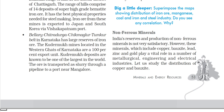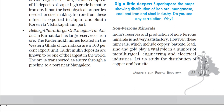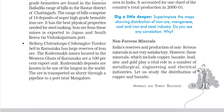The Ballari–Chitradurga–Chikmagalur–Tumkur belt in Karnataka has the largest reserves of iron ore. The Kudremukh mines in the Western Ghats of Karnataka are a 100% export unit and are known to be one of the largest deposits in the world. The ore is transported in slurry form through a pipeline to a port near Mangaluru.